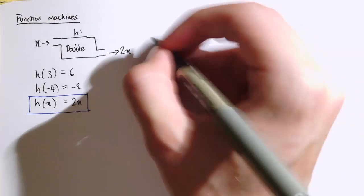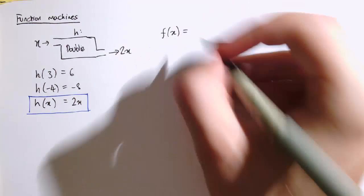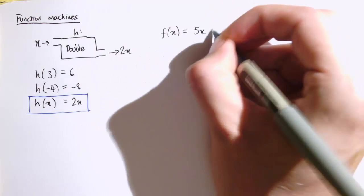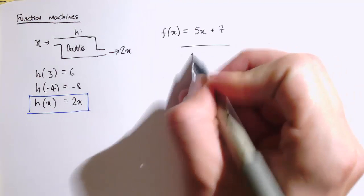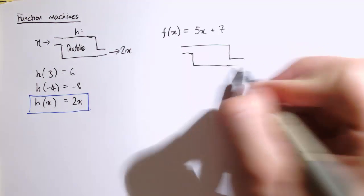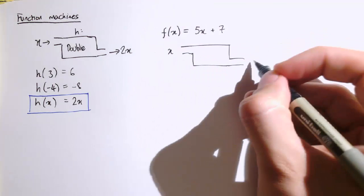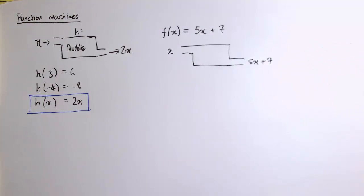So actually I could define another function by an algebraic rule. I could say f of x is equal to 5x plus 7. So what I'm thinking of there is having a machine which takes an input and gives 5x plus 7 as the output.